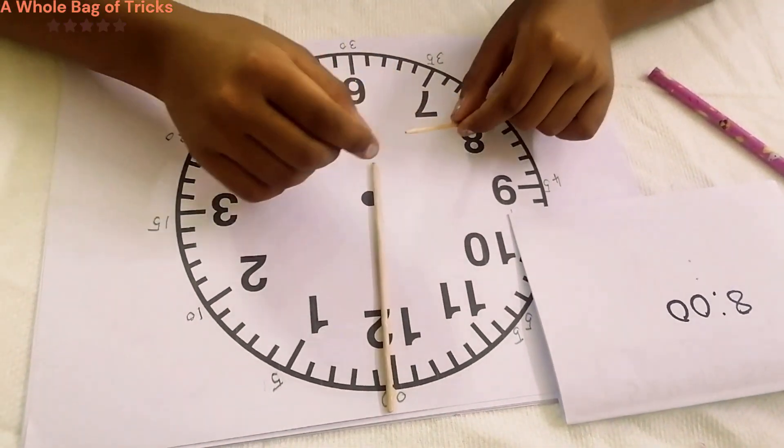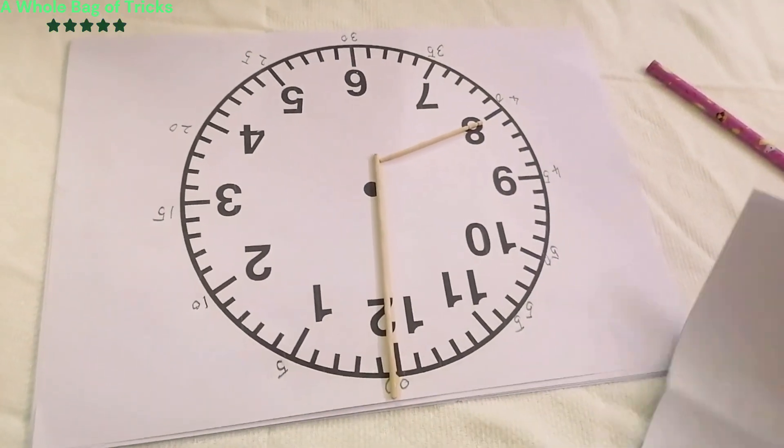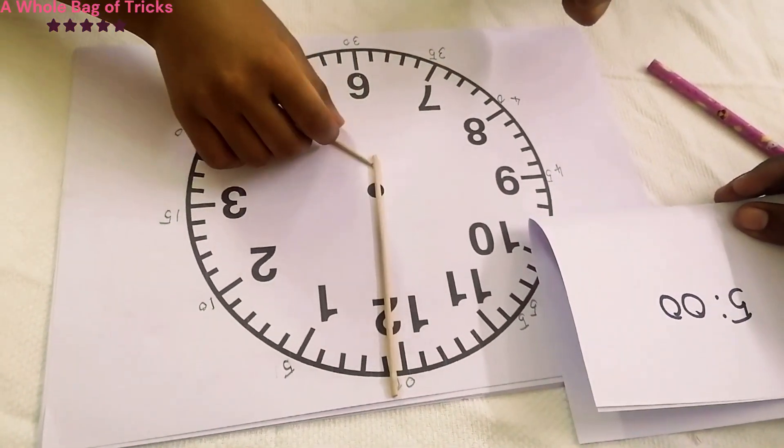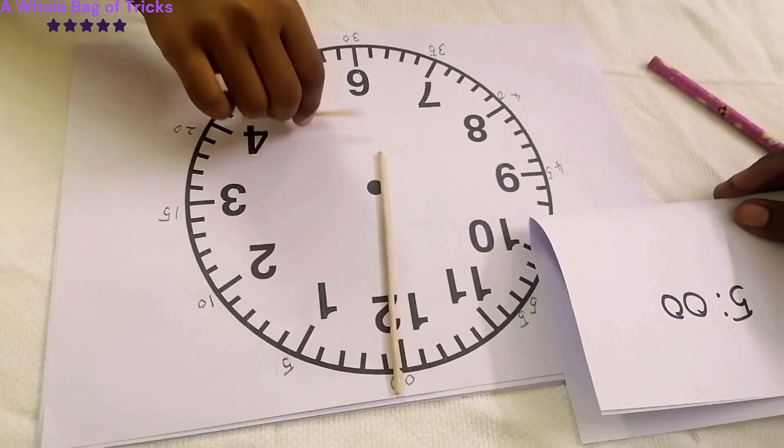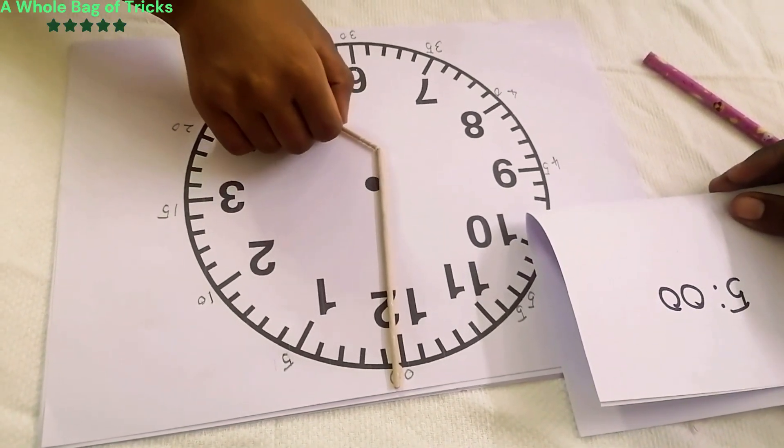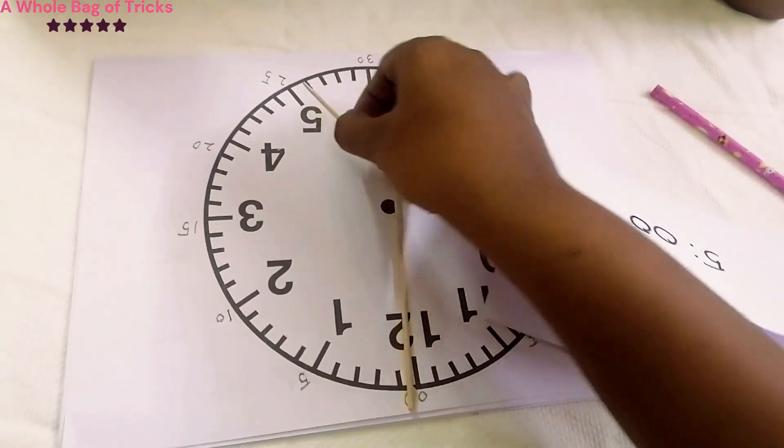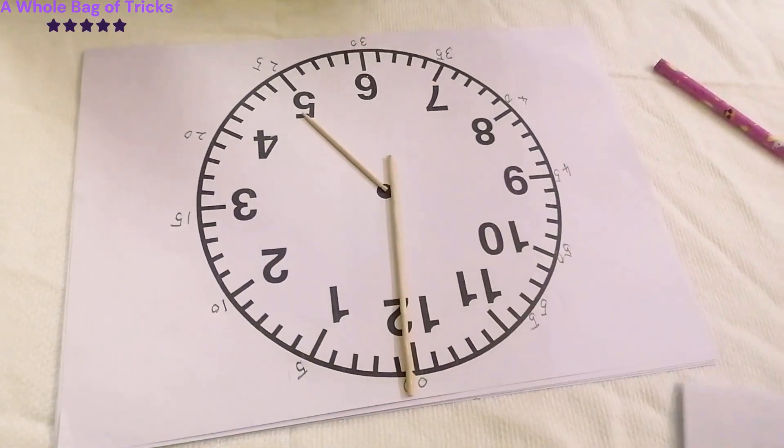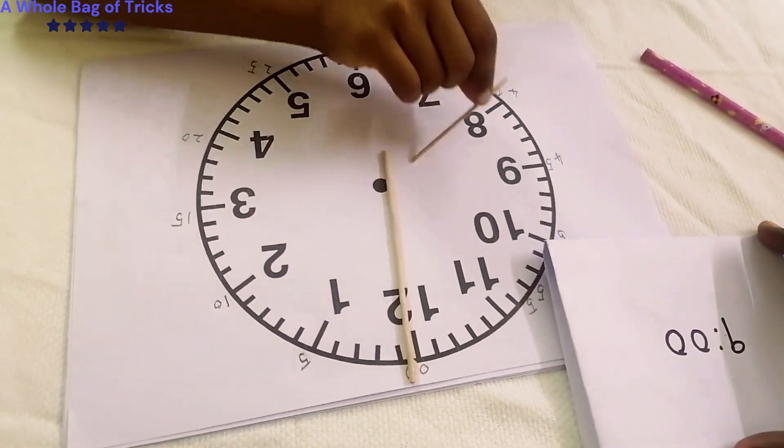The kid has to understand that the number that comes before the colon is the hour and this number should be pointed by the shorter stick. And the number that comes after the colon is the minutes and that should be pointed with the longer stick to the number written outside the clock's face. This is the first step. Let your kid get familiarized with this as much as possible. Give them as many times as possible and make them understand the concept.